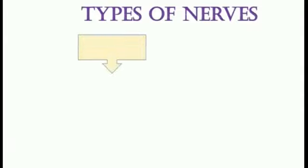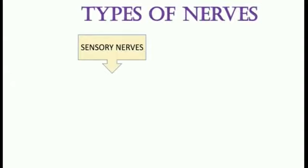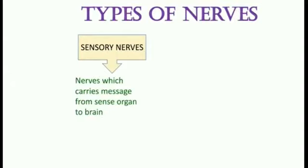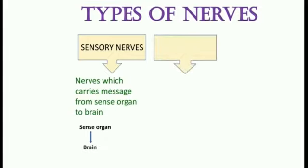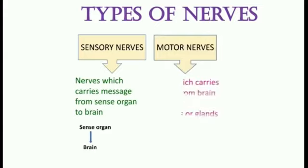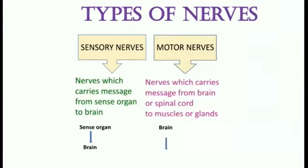There are three types of nerves and we will study each one of them one by one. First is sensory nerves — nerves which carry messages from the sense organs to the brain.